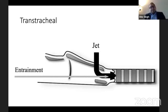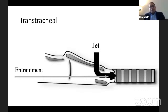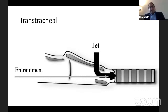With trans-tracheal delivery, it is important that the airway is kept patent. Otherwise there can be barotrauma. There have been quite a few cases of severe barotrauma with trans-tracheal jet ventilation where the upper airway was obstructed. There must be a method for gases to be expired out.